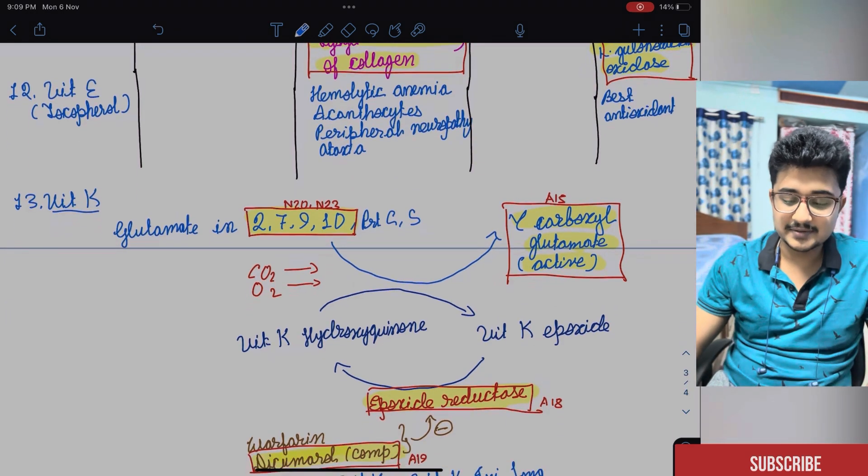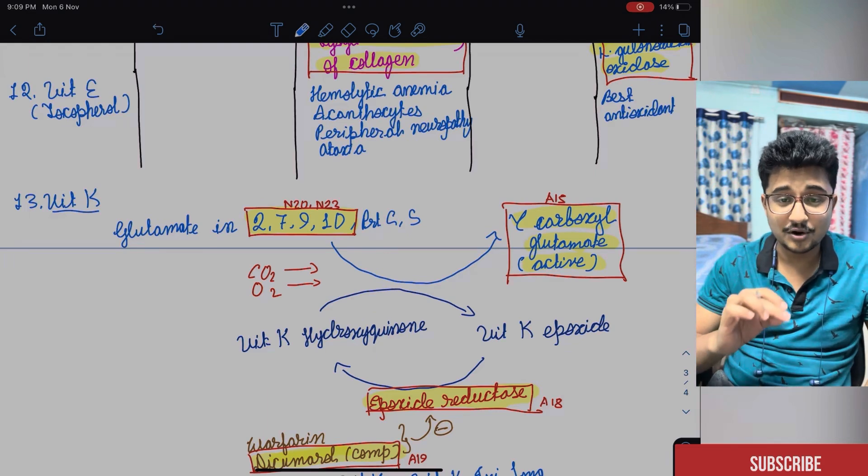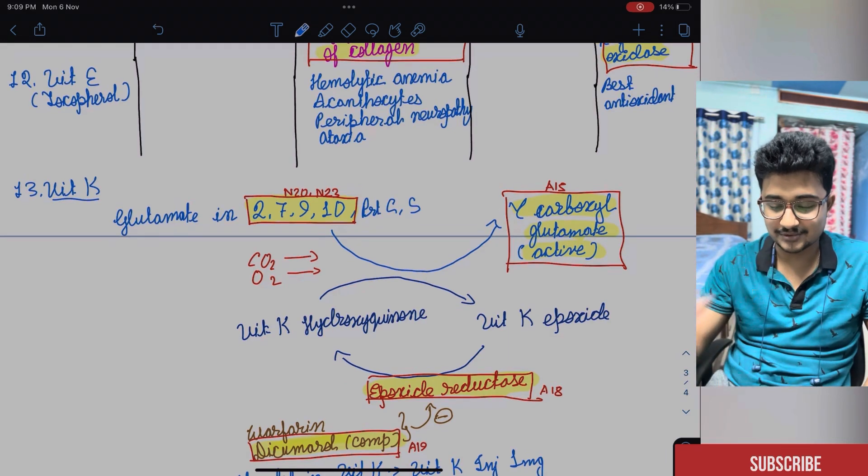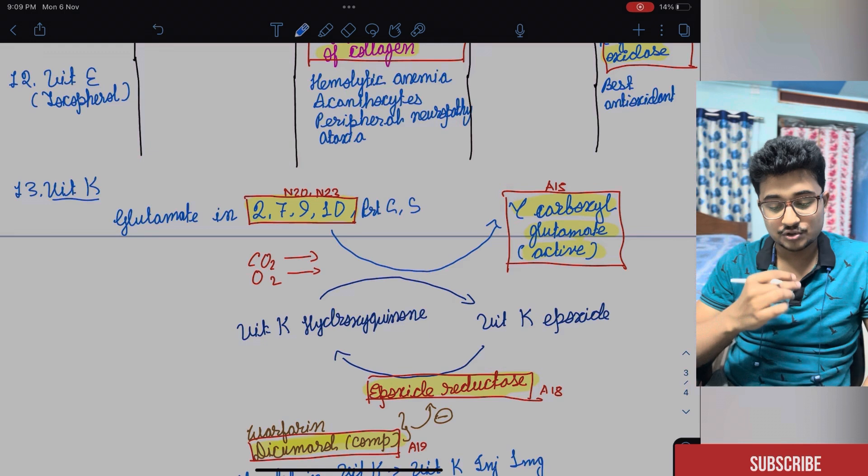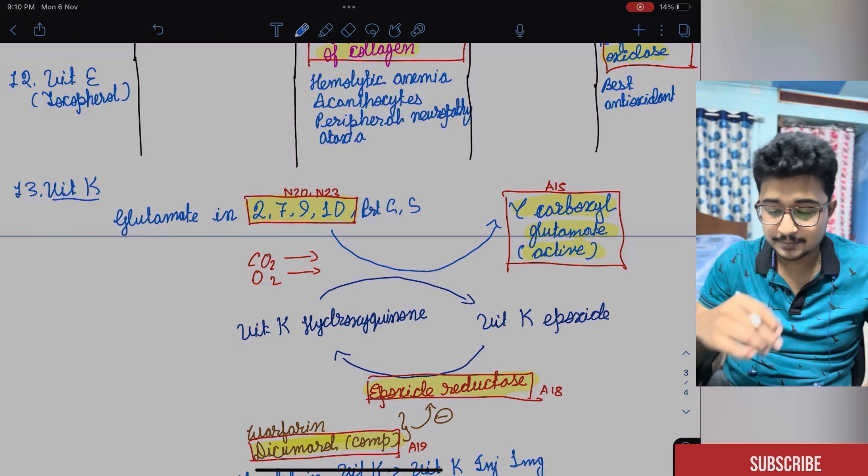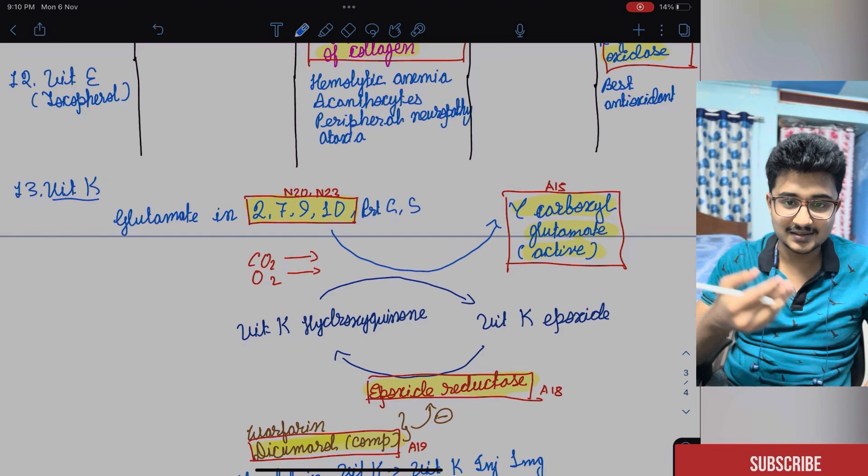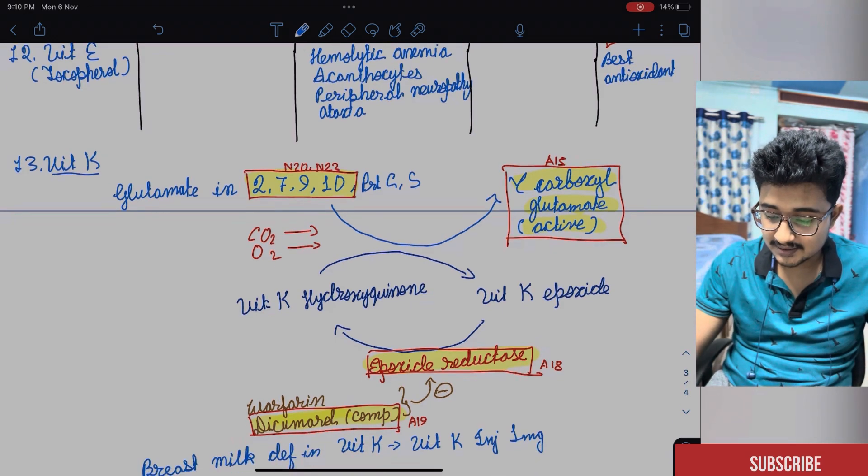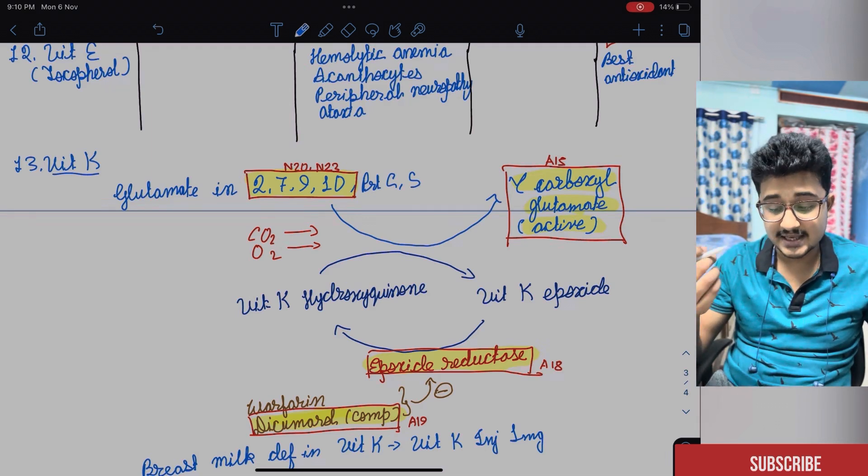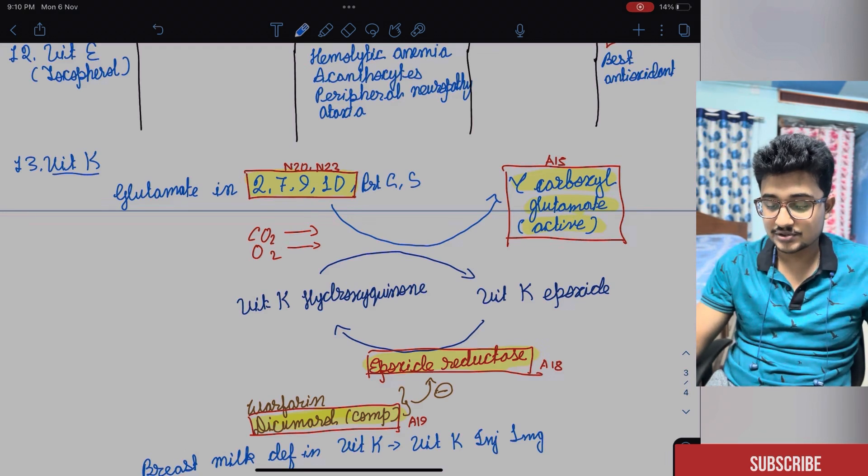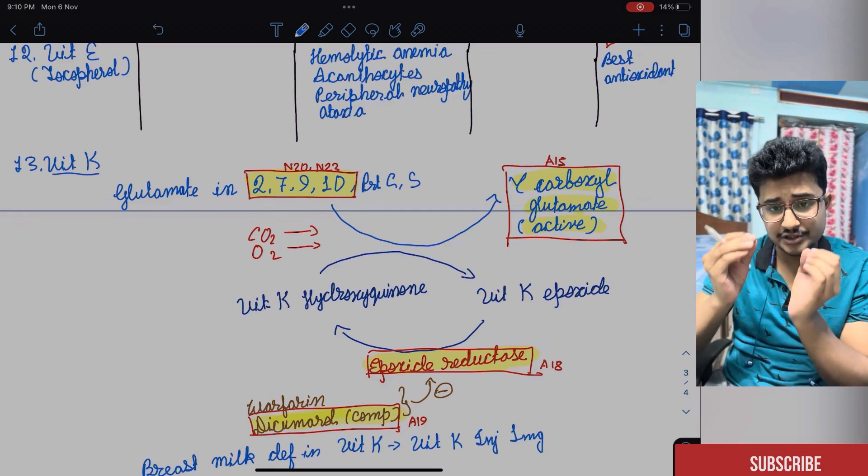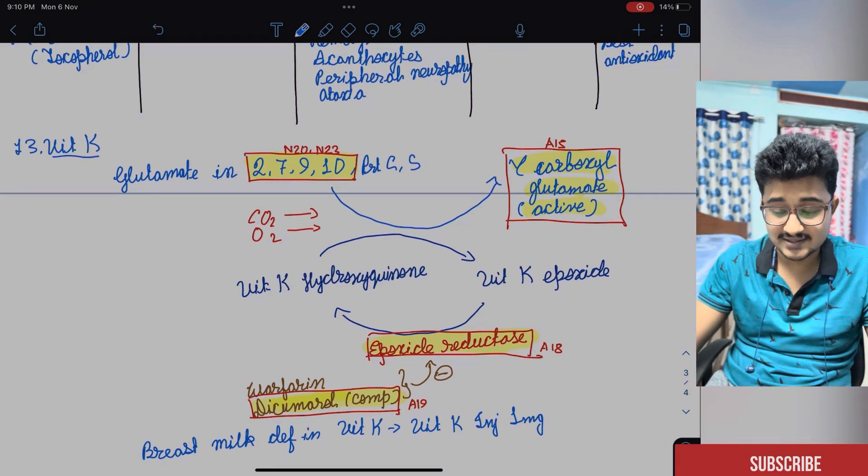The last vitamin, vitamin K, it's also asked very many times and it is a favorite topic of AIMS. By this only you can understand how AIMS asks the question. Glutamate in factor 2, 7, 9, 10. This is very much important. It has come in NEET. AIMS people don't give so much easy. And protein C and protein S, this you have to remember because this can come in future. And it helps in the vitamin K hydroquinone converts with oxygen and CO2 to vitamin K epoxide and it gives the gamma carboxyglutamate derivative. Because of gamma carboxyglutamate, it can chelate to the calcium and become active. This was asked in AIMS 15.